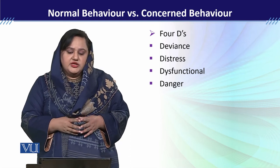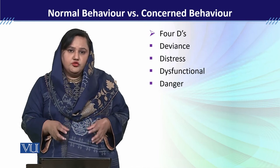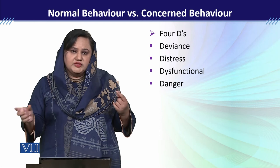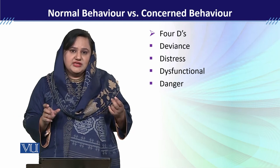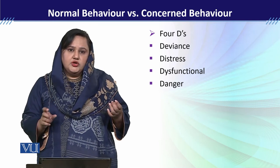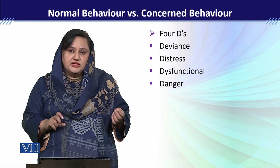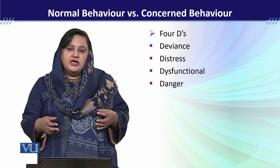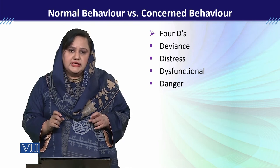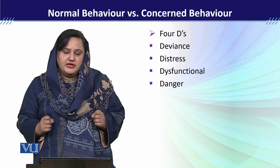Normal behavior اور concerned behavior کو سمجھنے کے لئے ان 4Ds کو سمجھنا ضروری ہے: deviance — آپ social norm سے ہٹ کر perform کر رہے ہو؛ distress — stress کو properly cope نہیں کر پا رہے؛ dysfunctional — socially اور occupationally dysfunctional ہو گئے ہو؛ اور danger — ایسا behavior جس سے اپنی یا دوسروں کی جان کو خطرہ ہو۔ یہ سب concerned یا abnormal behaviors کہلاتے ہیں۔ Thank you.